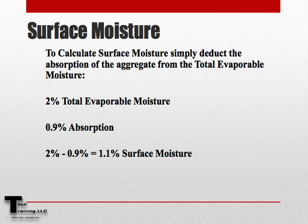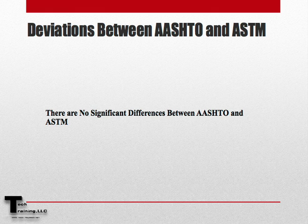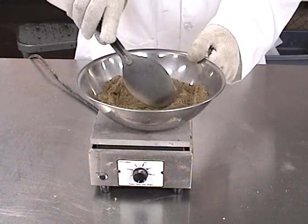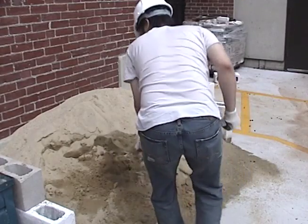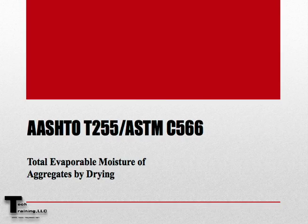Surface moisture is simply the difference between the total evaporable moisture and the absorption of the aggregate. So here, if we had 2% total evaporable moisture and the absorption of our aggregate was 0.9%, we take 2% minus 0.9%, giving us 1.1% surface moisture on our aggregates. Finally, there are no significant differences between AASHTO and ASTM for this procedure, and this will conclude AASHTO T255 and ASTM C566 Total Evaporable Moisture of Aggregates by Drying.